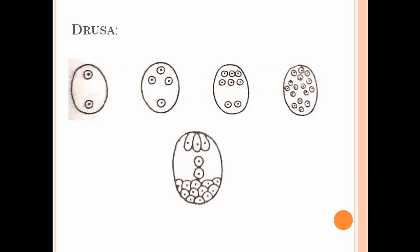Next is the Drusa type of embryo sac. Starting from the binucleate stage, it undergoes nuclear division to form the tetranucleate stage. But here, three nuclei migrate towards the micropylar end and one remains at the chalazal end. The three nuclei at the micropylar end undergo nuclear division to form 6 nuclei, while the single chalazal nucleus divides into 2. The embryo sac is thus 8-nucleated, but with a different arrangement: 6 nuclei at the micropylar end and 2 at the chalazal end.